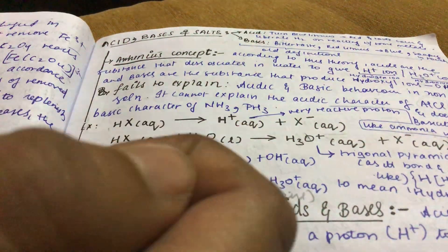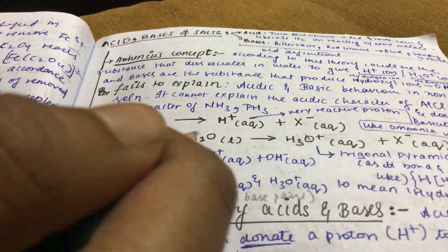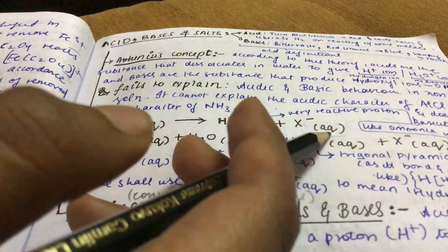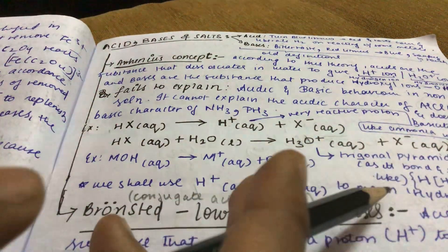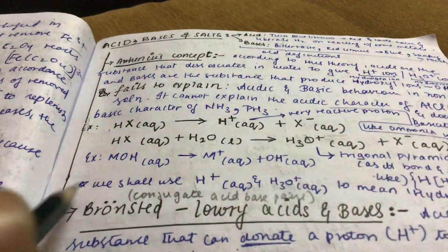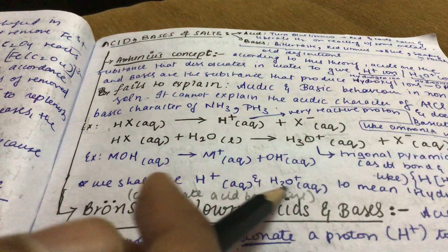MOH aqueous gives M plus aqueous plus OH minus aqueous. This is trigonal pyramidal as its bond structure is pyramidal. This is the bond structure of hydrated proton. We shall use H plus aqueous and H3O plus aqueous.